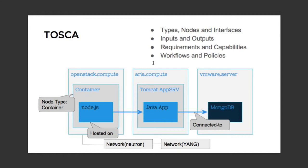Using Tosca I can describe this topology, all its relationships, in order to orchestrate this application. I can also specify inputs and outputs, which are crucial to the application blueprint — things like a specific port I'd like to customize or a specific IP address. As part of Tosca, I can also set workflows and policies.